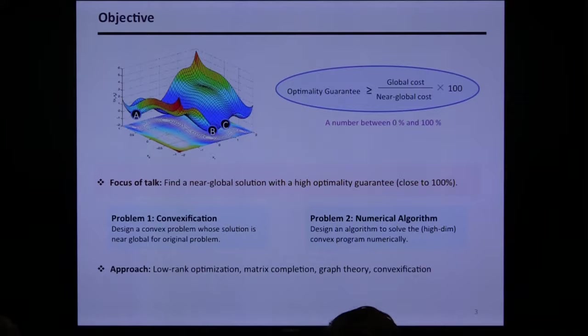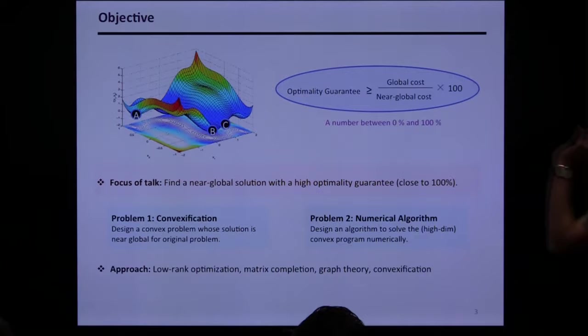We're going to use ideas and techniques from different areas and also develop techniques in areas like Lagrangian optimization, matrix completion, graph theory, and different convexification techniques. Before talking about this abstract problem, let's motivate it and see why we care about optimization at this scale.